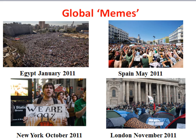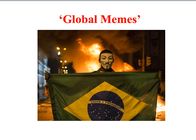Recent political protests have created what we call global memes. A meme is an idea, behaviour, or style that spreads from person to person within a culture. Examples spread via the global media include the Occupy movement, inspired by the occupation of Tahrir Square during the Arab Spring — that style of protest then inspired movements in Europe, America, and Britain. Another meme spread via global media in terms of political protest is the V for Vendetta Guy Fawkes mask, whose significance we'll discuss in class.